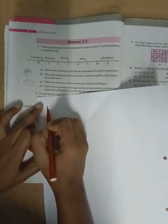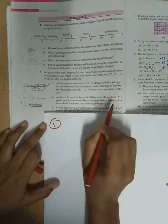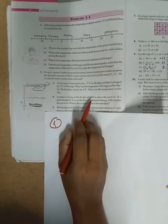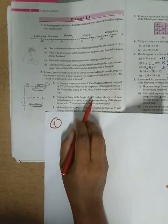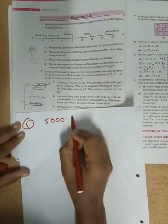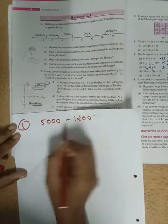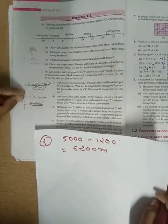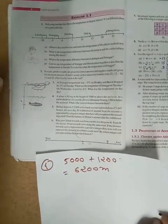Simply addition karna hoga. Question number four. And you have to write the sentence: 'A plane is flying at a height of 5000 meters above the sea level at a particular point.' So 5000 plus 1200 equals 6200 meters. Vertical distance means total distance find out karna hai.